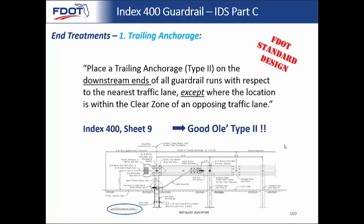The first type of end treatment is the trailing anchorage — the good old Type 2. As the name implies, you place it on the downstream end to basically end any run of guardrail. You just have to watch out for opposing lanes where this end of guardrail might be in the clear zone of opposing traffic. Be especially cautious around two-way, two-lane roads where you're likely to be in the clear zone of an opposing lane — in that case, you need an approach terminal. If not, go ahead and use a trailing anchorage.